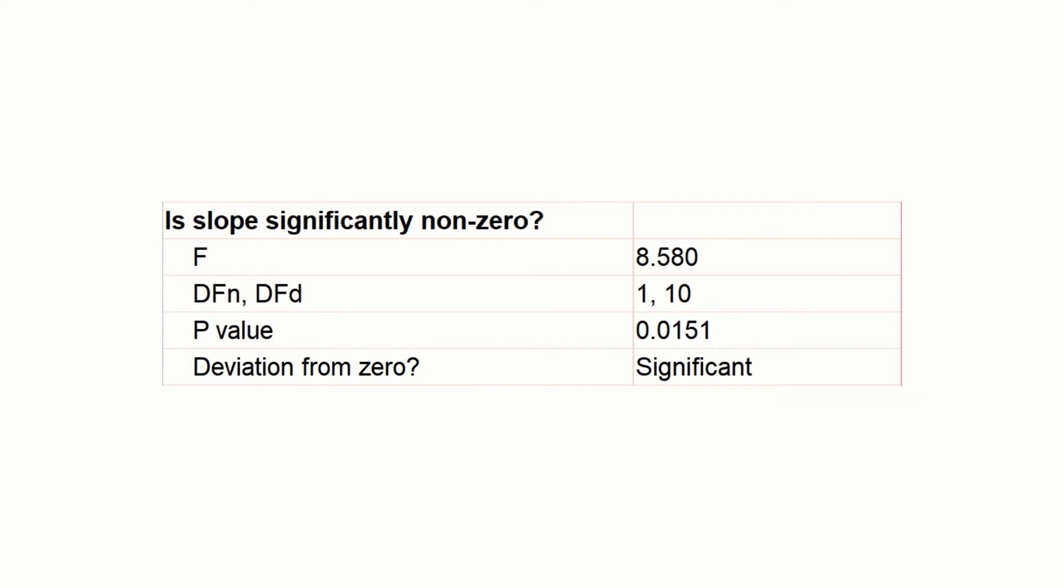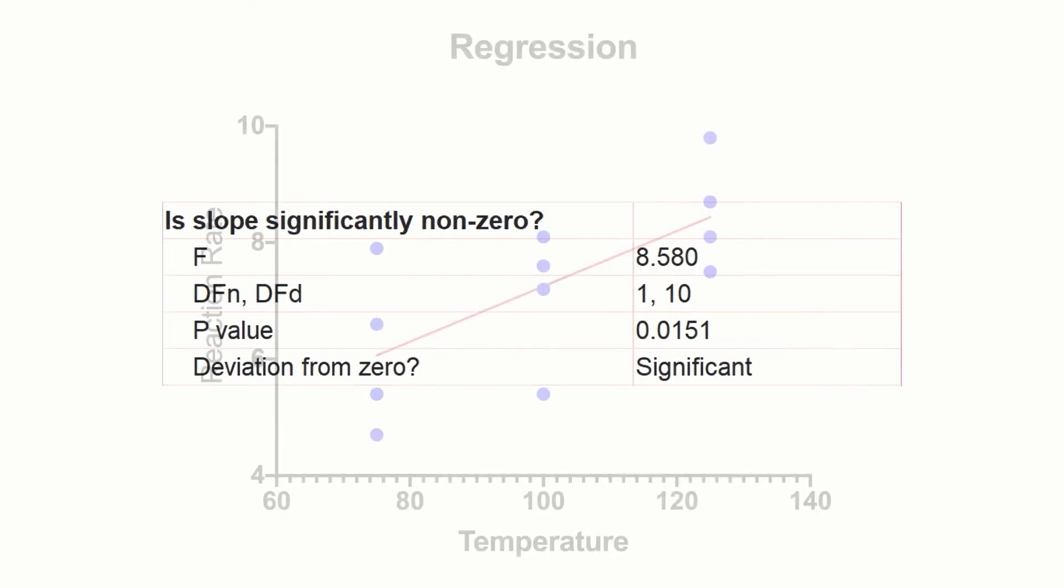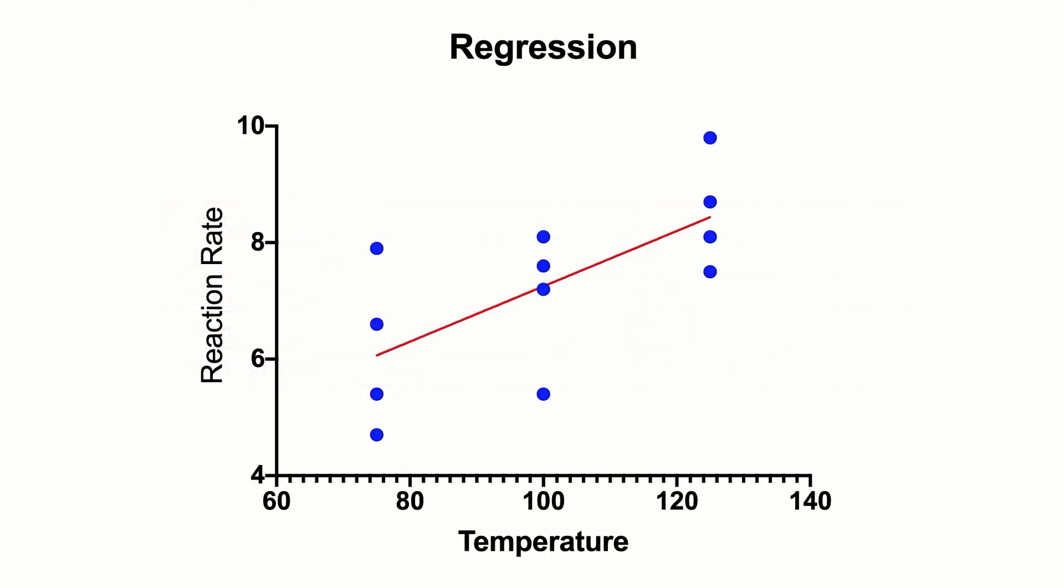In our dataset, the regression p-value of .0151 indicates there is a significant trend. The regression graph shows this trend line, which is clearly increasing.